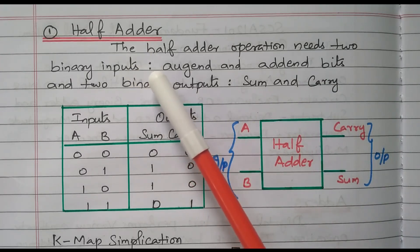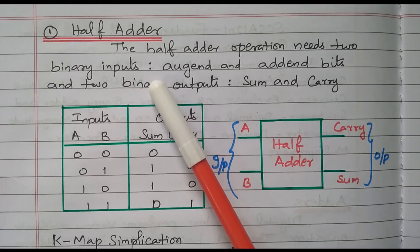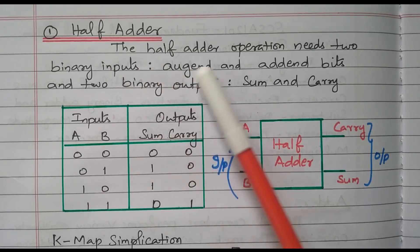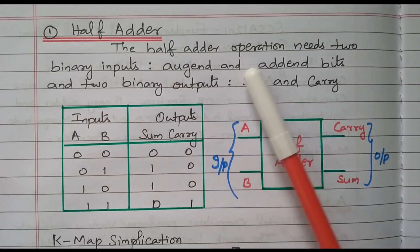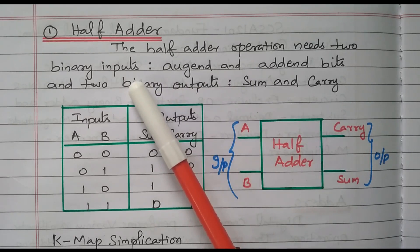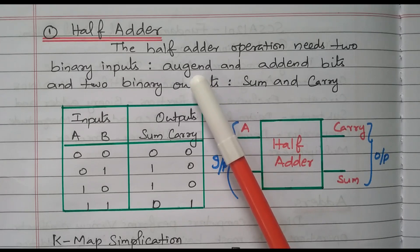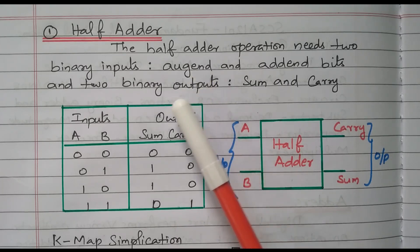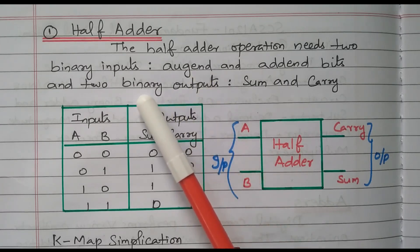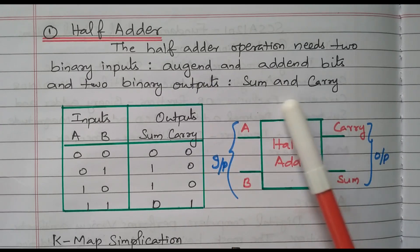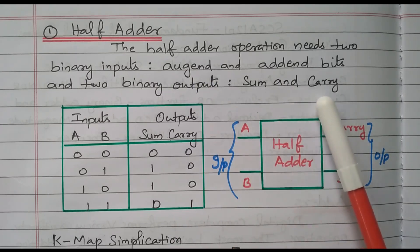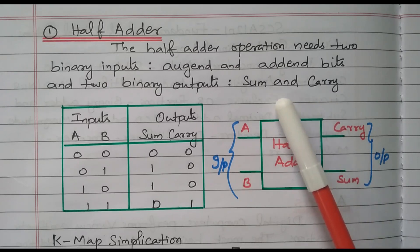First we will see the details about the half adder, then we will go to the NAND gate implementation. The half adder operation needs two binary inputs — it will add two binary inputs, binary input 1 and 2. The output is nothing but sum and carry; it will generate the sum as well as carry. So two inputs and two outputs.